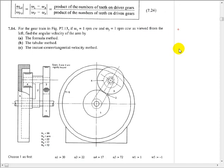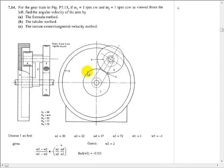And what we have is, it says for the gear train shown in this figure, if omega-1, which is this small sun gear, is 1 RPM clockwise, and omega-5, which is this large gear, is 1 RPM counterclockwise, both as viewed from the left-hand side of the machine, find the angular velocity of the arm, which is number 2. And we're going to do that by the formula method only.